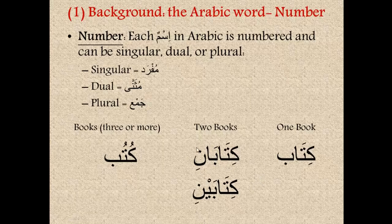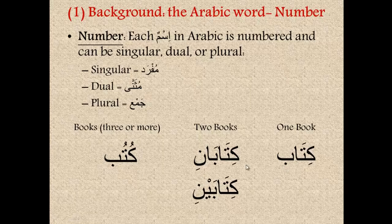Kitabani and kitabaini both mean two books, but the difference is that they have different case endings — different grammatical values and functions. For now, I would encourage you to train your ears to listen for these phonetic changes. Ani and ayni usually refer to the dual version of a particular thing. And of course we have three or more, which is kutub. So kitab is one book, kitabani/kitabaini is two books, and the plural — three or more — is kutub. The dual does not exist in the English language, so this is a very unique aspect of Arabic.